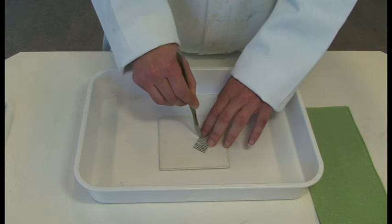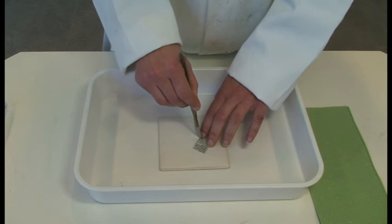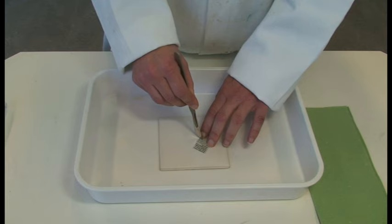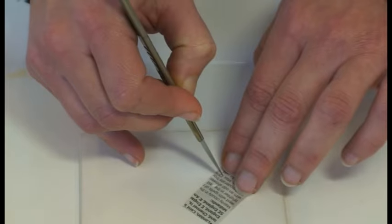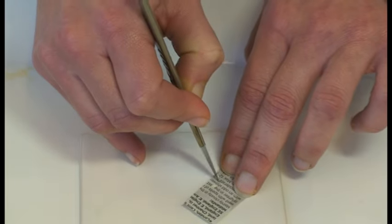To practice making a wet mount slide you can use a small piece of newspaper. Start by cutting out one letter, we'll use an E. As this is what we want to look at under the microscope we call this our specimen.